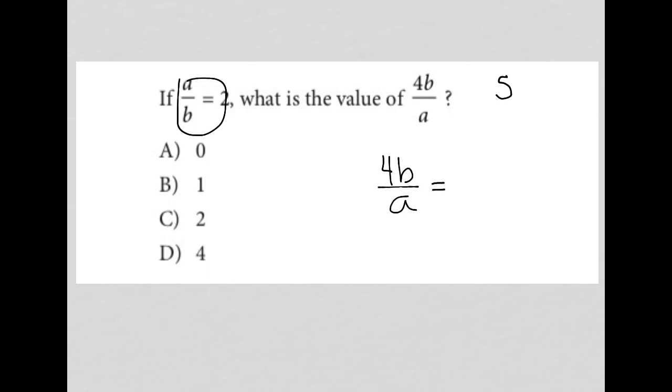So I'm going to think of this as 4 times B over A. That helps me because then since my B over A is isolated, I can relate that back to the A over B.